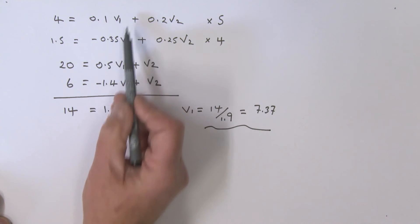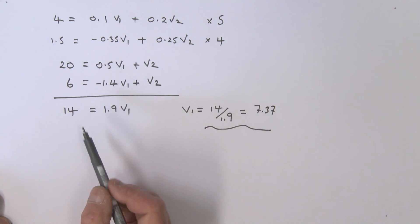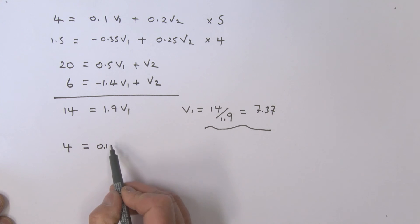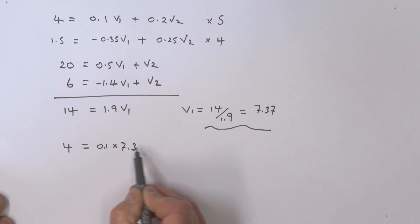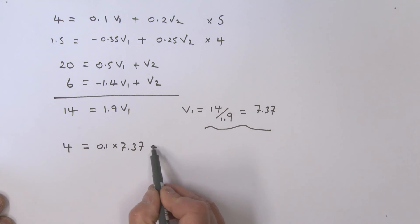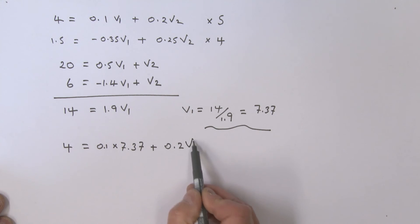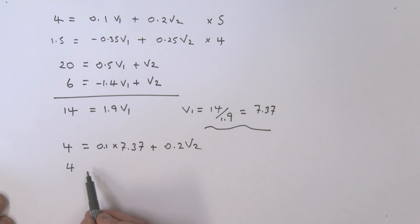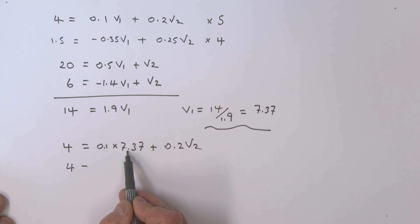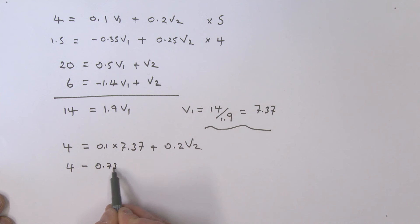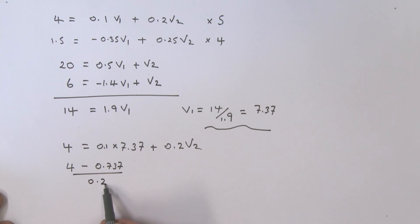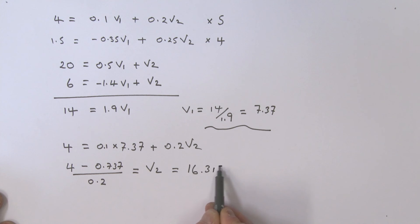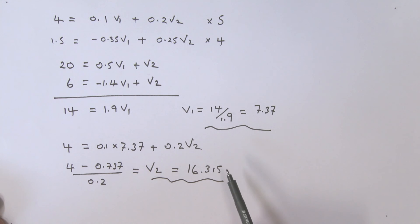Now finding V2 using the first equation: 4 equals 0.1 times 7.37 plus 0.2 V2. Taking 0.737 to the other side and dividing by 0.2 gives V2 equals (4 minus 0.737) divided by 0.2, which equals approximately 16.315 volts. There is a bit of rounding.